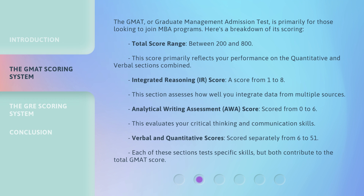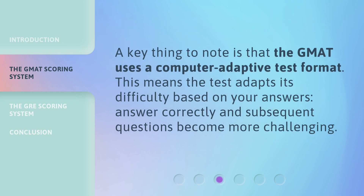Verbal and quantitative scores are scored separately from 6 to 51. Each of these sections tests specific skills, but both contribute to the total GMAT score. A key thing to note is that the GMAT uses a computer adaptive test format. This means the test adapts its difficulty based on your answers — answer correctly and subsequent questions become more challenging.